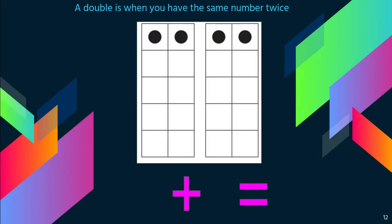How about this one? Two plus two equals four. So this is a double. Remember, a double is when you have the same number twice.